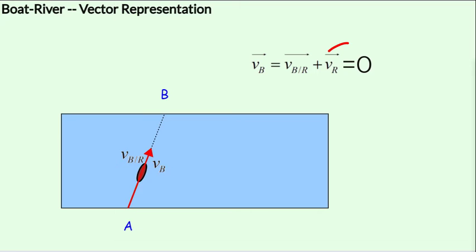So let's simulate that case. Now there is no current and you can see that the boat reaches the intended destination B. As you have a current, the boat begins to drift. And if there is a large current, then the boat begins to drift even more and ends up at C.